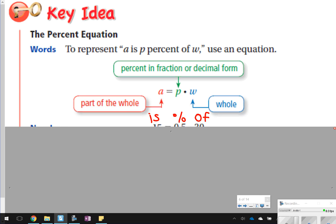A equals P percent. You do need to make sure that your percent is written in fraction or decimal form. Then W would represent the whole, so basically A is is, P is percent, and W is of.